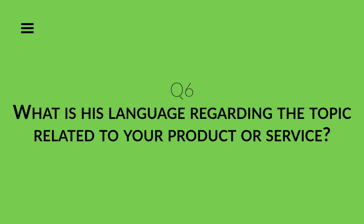Question number six: what is his language regarding the topic related to your product or service? One of the most important things in persuasion is to understand the point of view of your client better than himself. By using the same words he is utilizing, you become part of his world. In our case, since we are referring to a beginner looking for knowledge on how to create a website, we have to use easy language without any problematic words. If you are selling to an advanced target, you could use special words or expressions just to relate to that specific target.